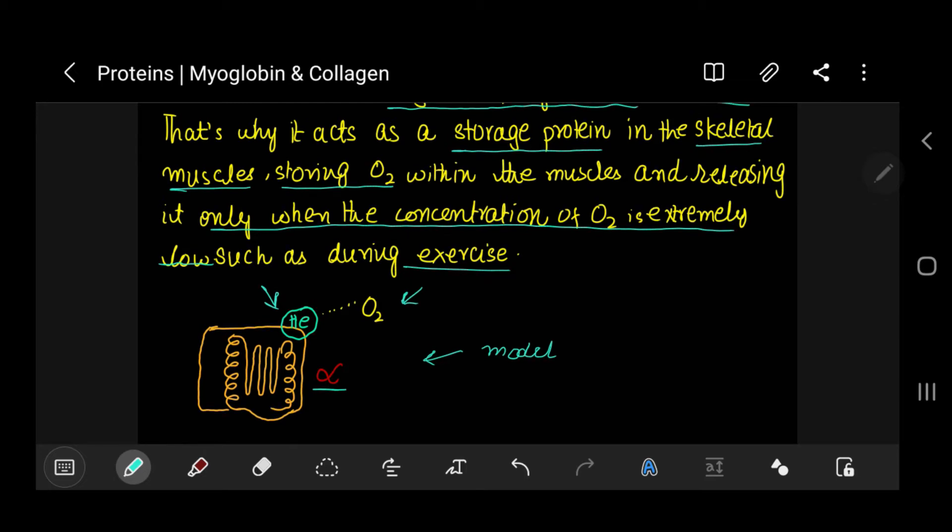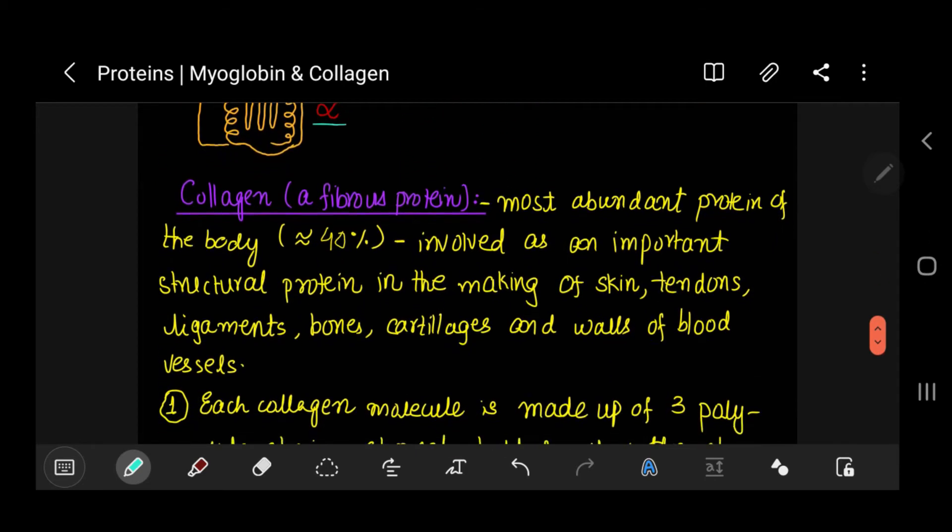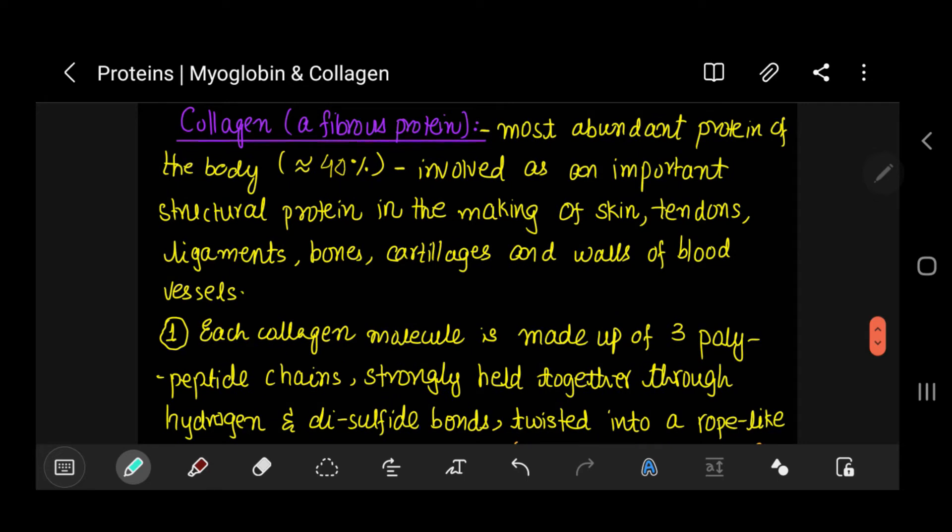Now let's move on to collagen. Collagen is a fibrous protein, that means it has non-polar R groups facing outwards and hence it's insoluble in water. It's the most abundant protein of the body, around 40 percent. It is involved as an important structural protein in the making of skin, tendons, ligaments, bones, cartilages, and walls of blood vessels.